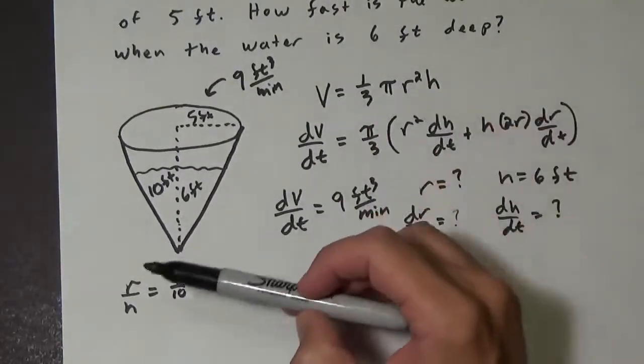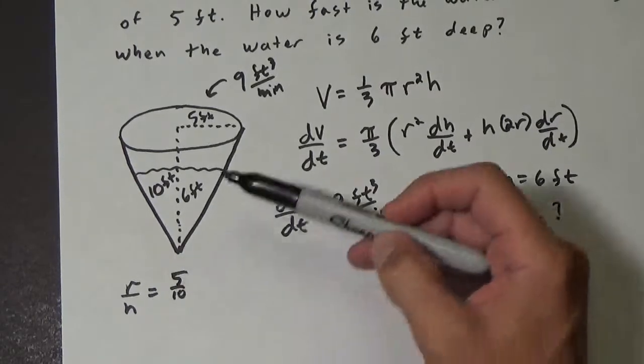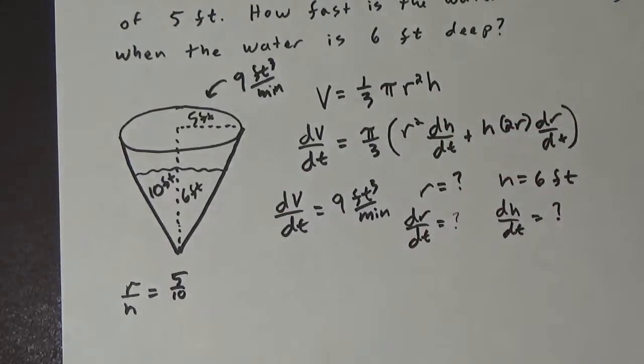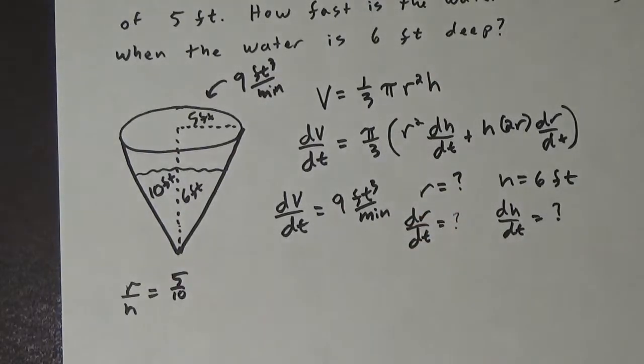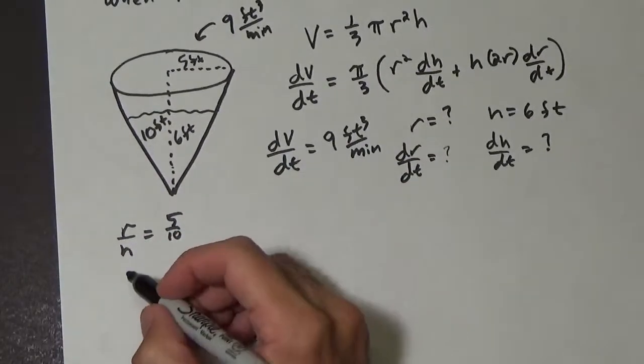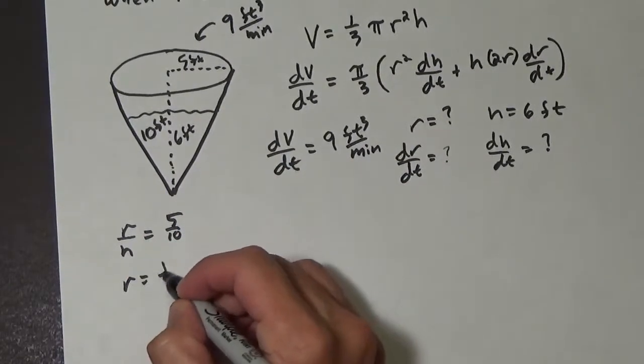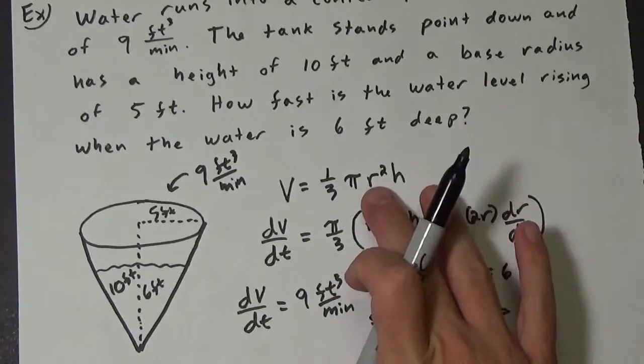Now, if we only needed r, that would be easy enough because we could just say r over 6 equals 1 half, which would make r 3 easy enough. But we also need dr dt, which we don't have that either. But why don't we do this? Instead of trying to figure that out from this little equation, let's go ahead and rewrite this to be r is 1 half h, multiply each side by h, and substitute that in for this.